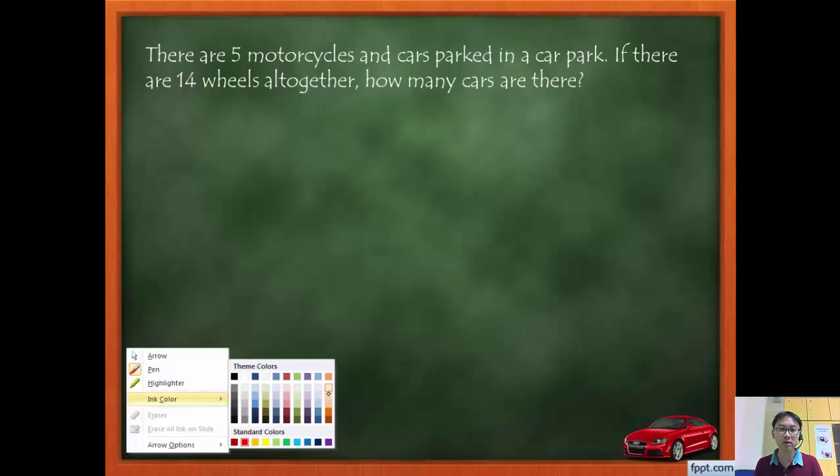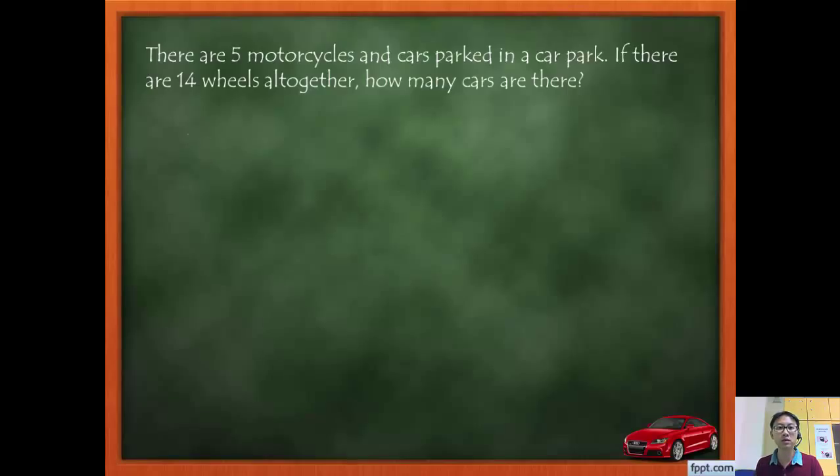Now in make a supposition, we assume or we suppose that something is happening. So I'm going to suppose if all the vehicles are motorcycles. I can choose either to have motorcycles or cars, so I will usually choose the smaller one, the one with the smaller amount, which means motorcycles. Because motorcycles have two wheels, cars have four wheels. So if all the vehicles are motorcycles, then I will have how many wheels altogether? So let's draw. So one motorcycle, two, three, four, five. So each of them have two wheels. So five motorcycles, each of two wheels, so how many wheels do I have? So five times two and that will give me ten.